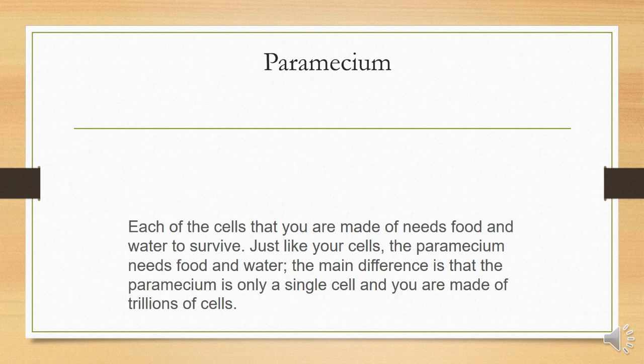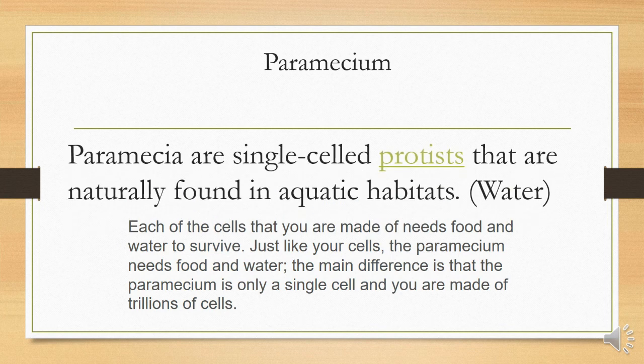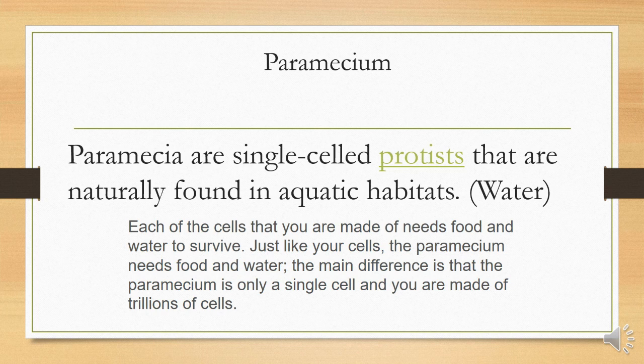Paramecium are single-celled protists that are naturally found in aquatic habitats in water. Each of the cells we are made of need food and water to survive. Just like our cells, parameciums also need food and water. The main difference is that the paramecium is only a single cell, whereas we are made of trillions of cells.